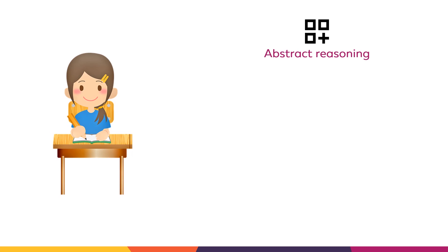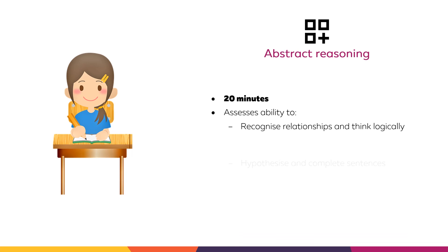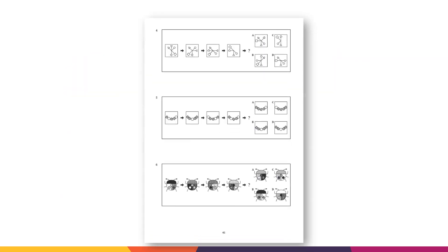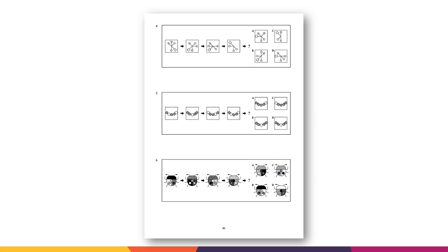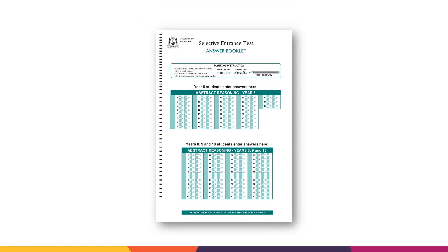The abstract reasoning multiple choice test is 20 minutes long and assesses your ability to see relationships and patterns and think logically. You will have 35 multiple choice questions to answer. Here are some example questions from the sample test available on the website. Shade your answers on the answer booklet in the designated section.